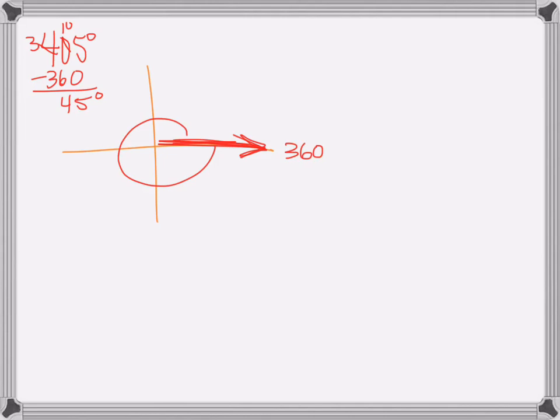So I need to go an extra 45 degrees, which means my angle is going to stop right there. So that's where it stops. It stops here in quadrant one, so that's good to know.